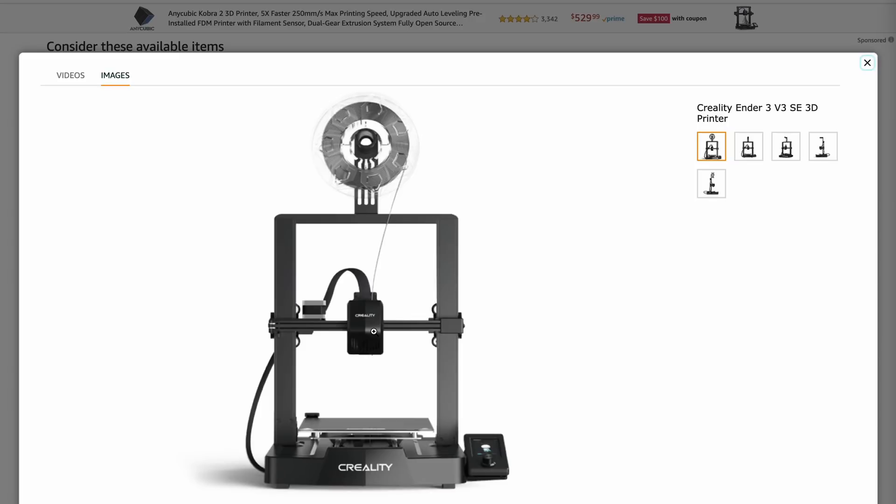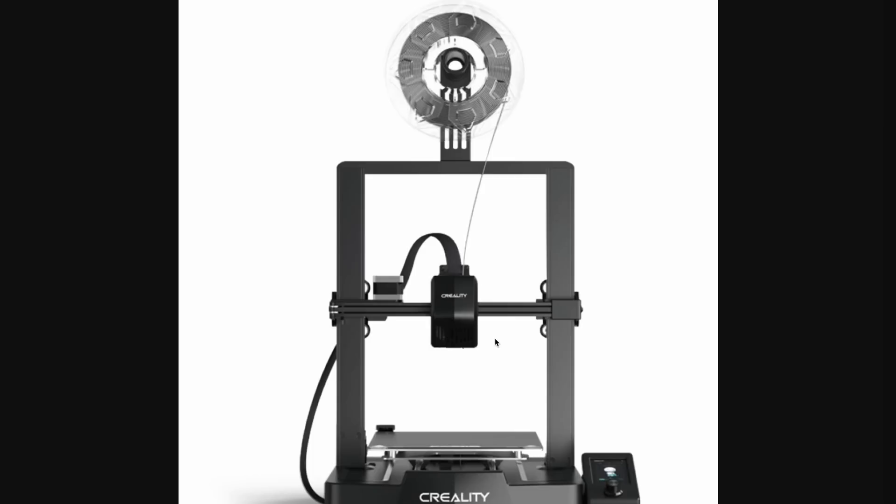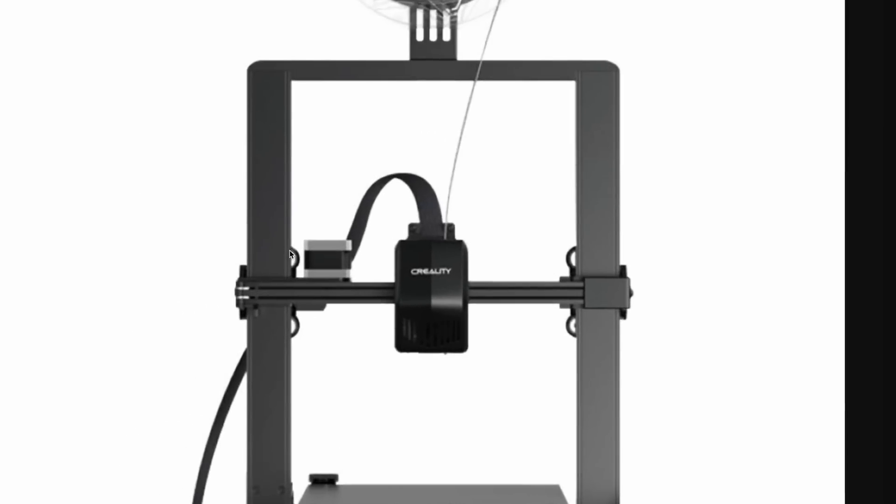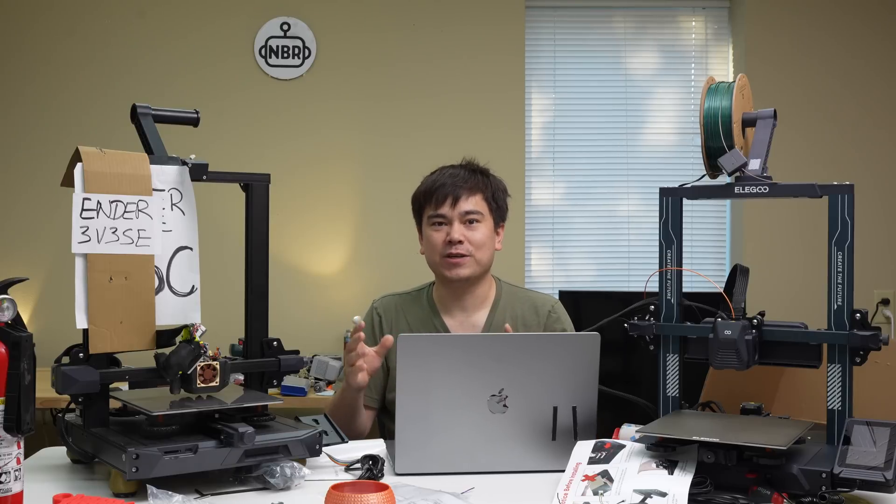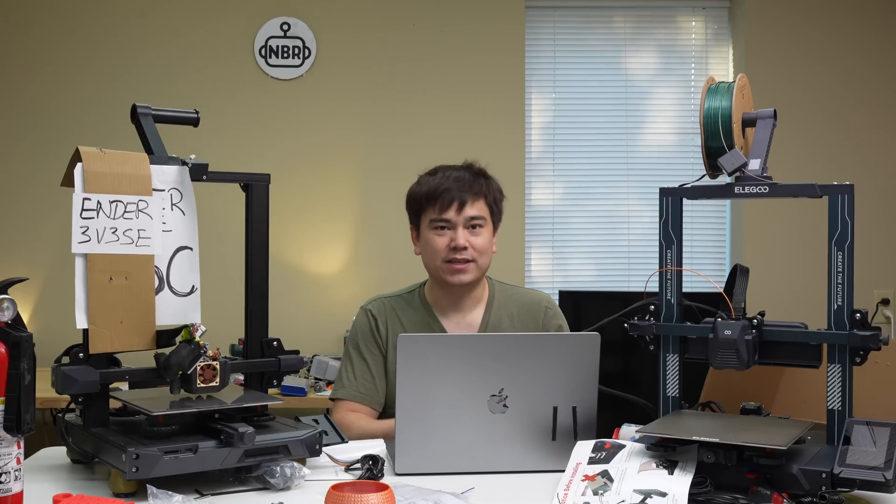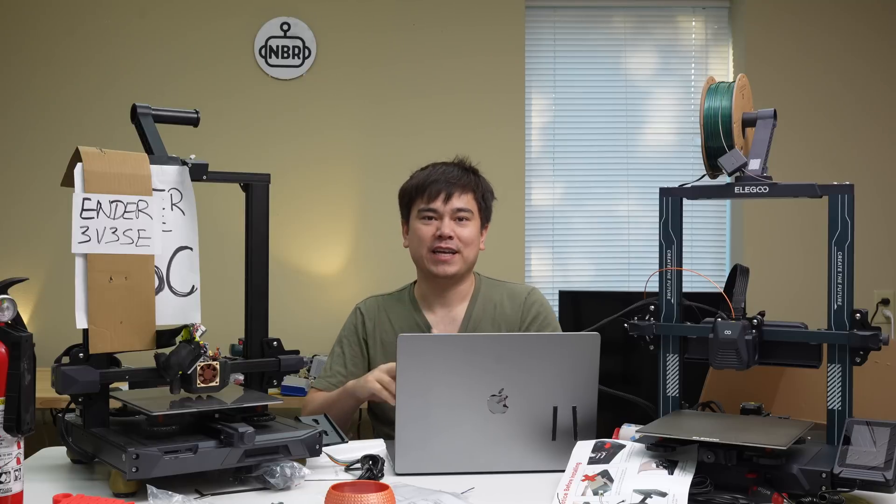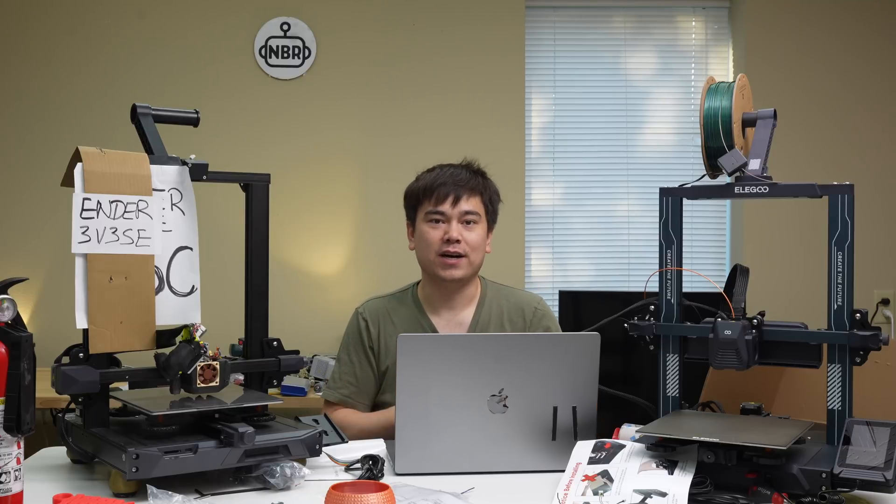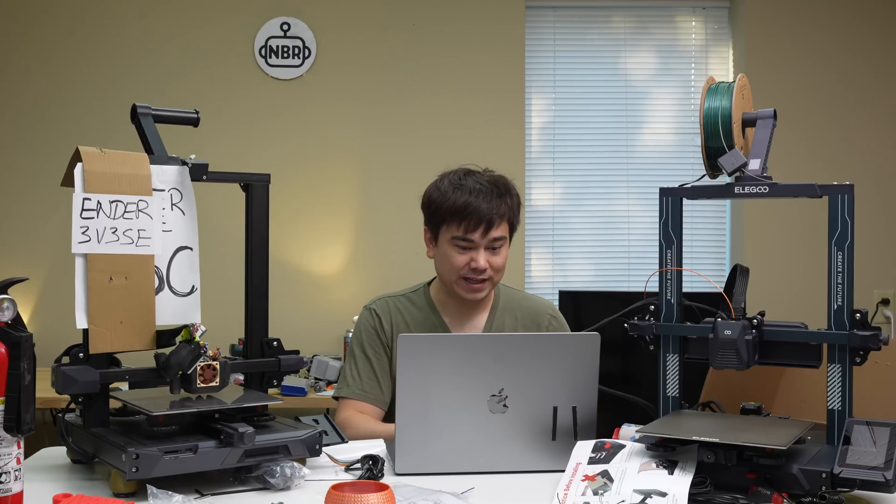It actually looks quite a bit different than Ender-3 models in the past. If you look closely at this image, you'll notice that these wheels are recessed into the actual frame. Instead of those wheels riding on the very outer surface of this extrusion, it looks like it's sunk in there a good half way. This indicates they're using a T-shaped extrusion that's been custom designed for this application. That's going to use less material, less wheels, and just overall reduce the cost of this machine. That's a very smart move by Creality.